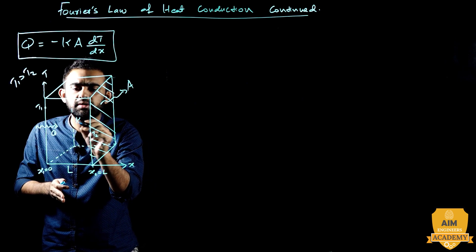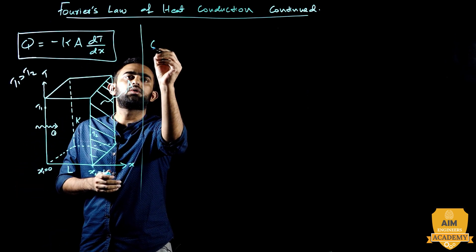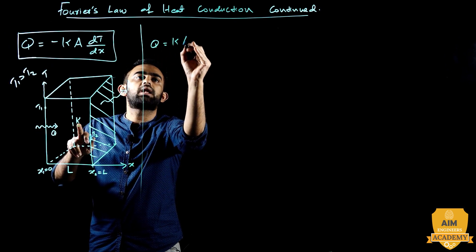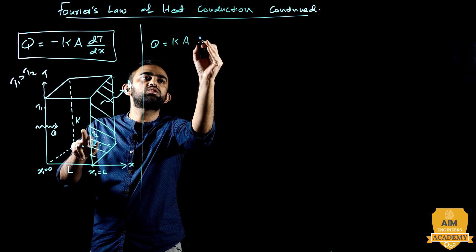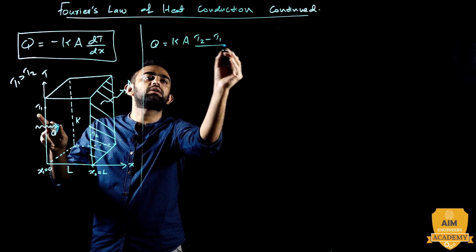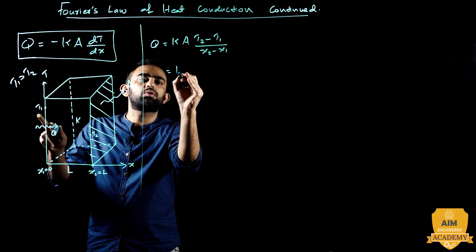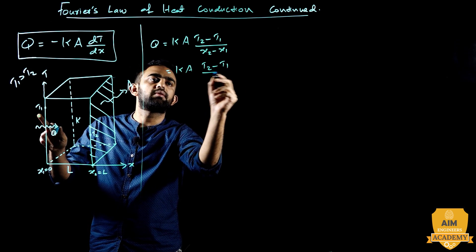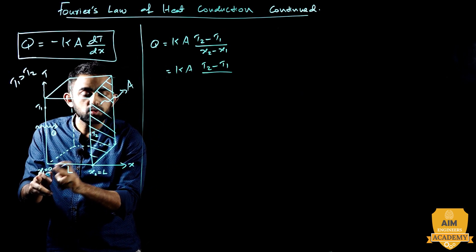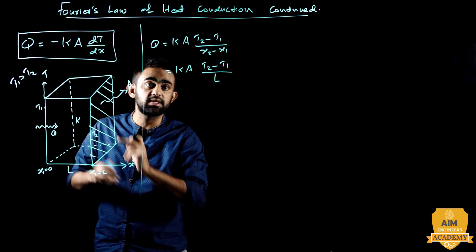This slab has thermal conductivity K. So Q equals thermal conductivity K times area A times dT, where dT is final temperature minus initial temperature, that is T2 minus T1, divided by dx, which is X2 minus X1. Since X1 is zero, X2 minus X1 is simply the thickness L of the slab.